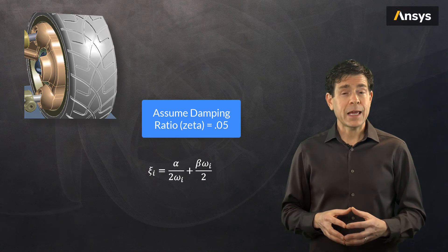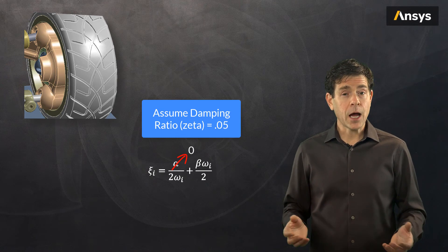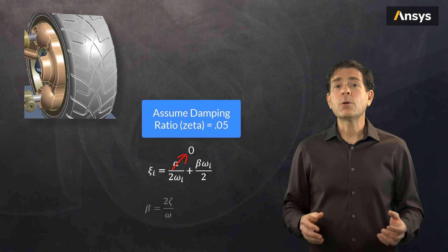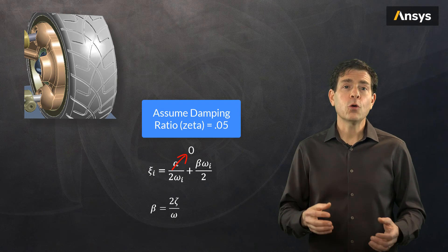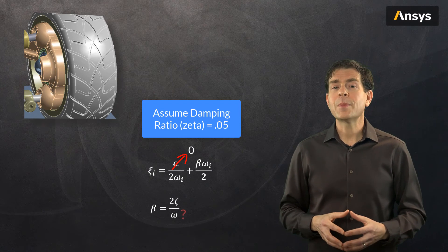Let's assume the mass damping alpha is 0, which can be a common assumption. We can now easily compute beta if we know omega, but what do we specify for omega?